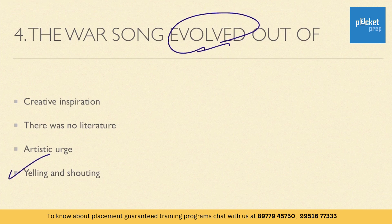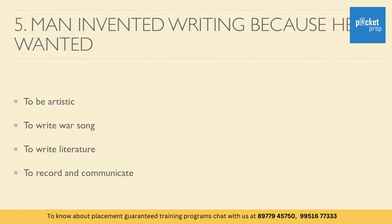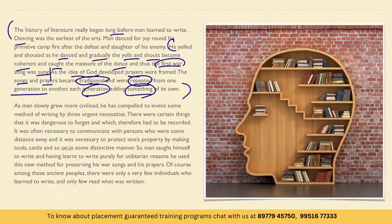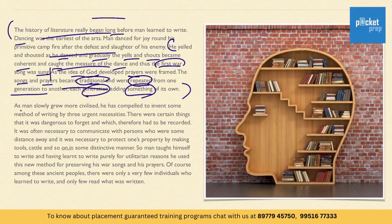If you understand the theme of the passage, a few questions can be answered directly. Lastly: 'man invented writing because he wanted' — let's skim the passage again. Going to this part: 'as man slowly grew more civilized, he was compelled to invent some method of writing by three urgent necessities.'